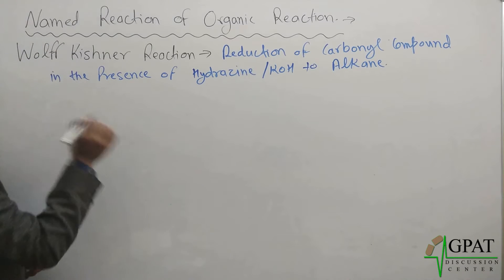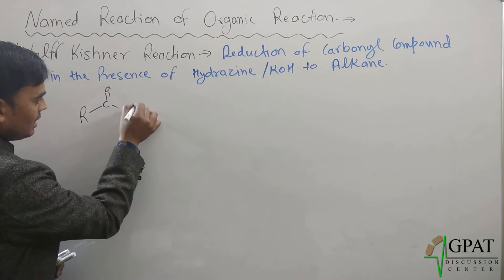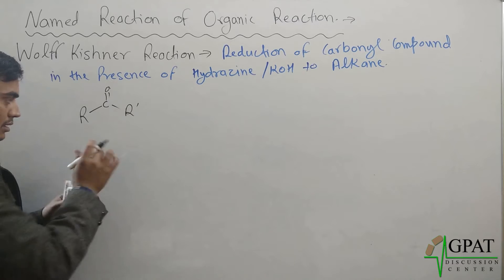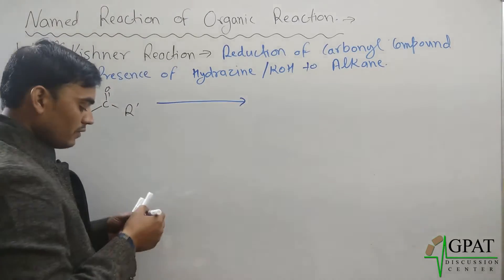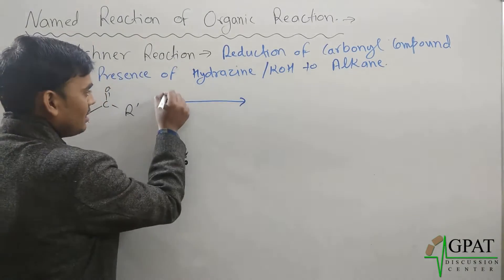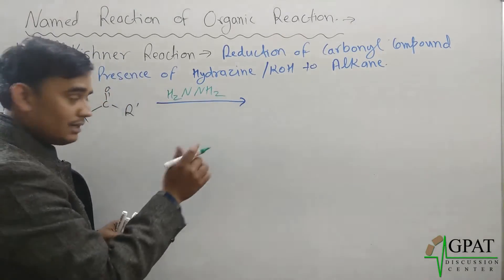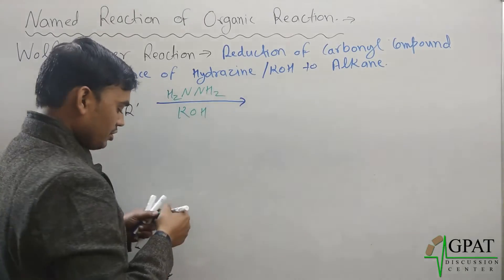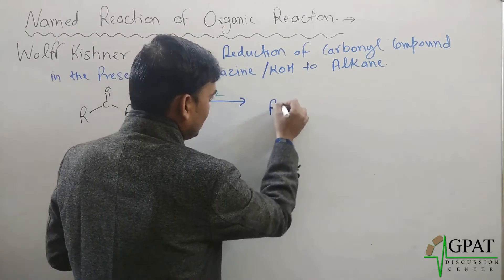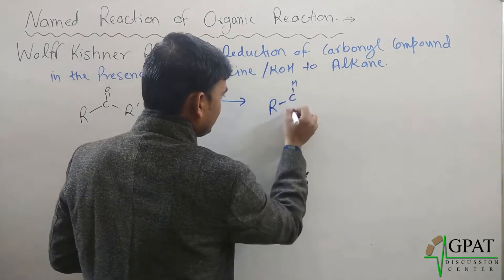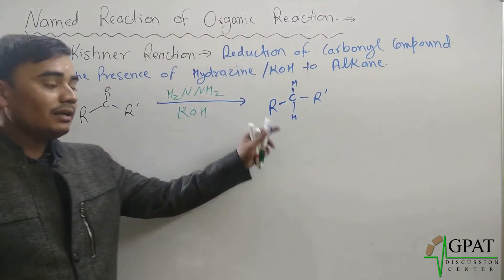Simply, take any carbonyl compound — for example, R-C(=O)-R', which is a ketone. This ketone will be reduced in the presence of hydrazine (H₂N-NH₂) and KOH. The product will be R-CH₂-R', that is an alkane.